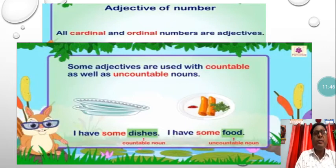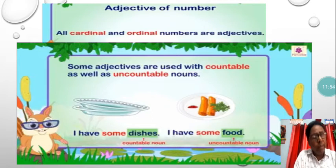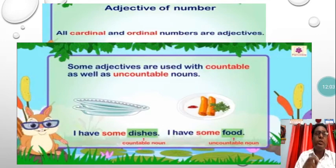All cardinal and ordinal numbers are adjectives, and that is adjective of number. All the cardinal and ordinal number examples given are adjectives of number.